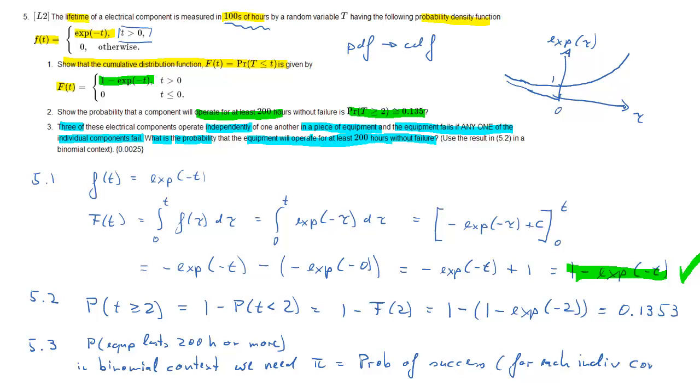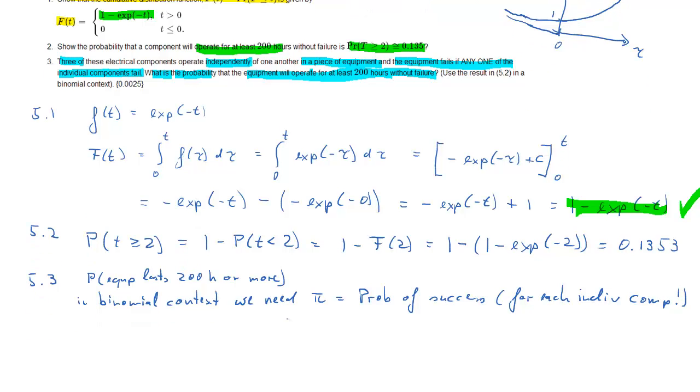First sort of repeated experiments. Now repeated experiments is for the individual component, so we need a probability of success for each individual component, and we shall define success here as a component lasting at least 200 hours.